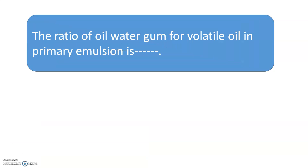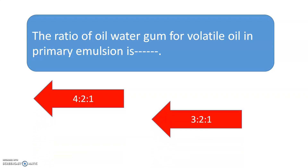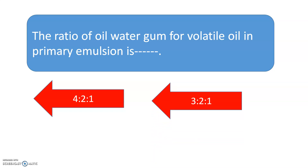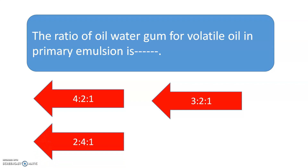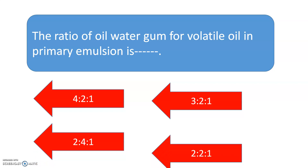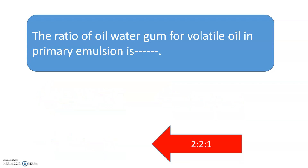The ratio of oil, water, and gum for volatile oil in the primary emulsion is? The options are: 4:2:1, 3:2:1, 2:4:1, or 2:2:1. The correct answer is: for volatile oil, the ratio of oil, water, and gum in the primary emulsion is 2:2:1.